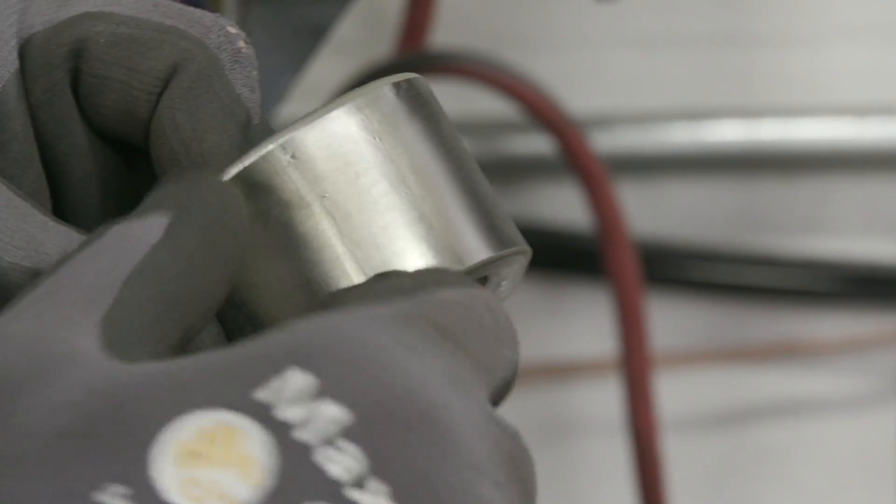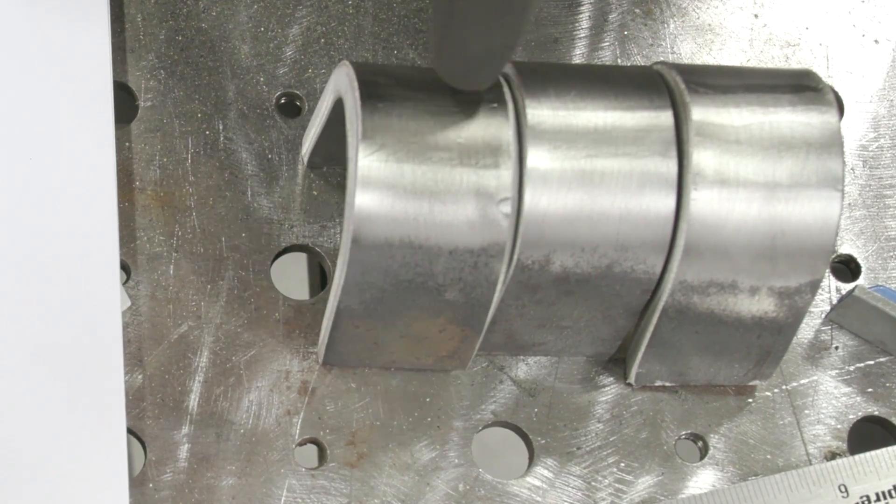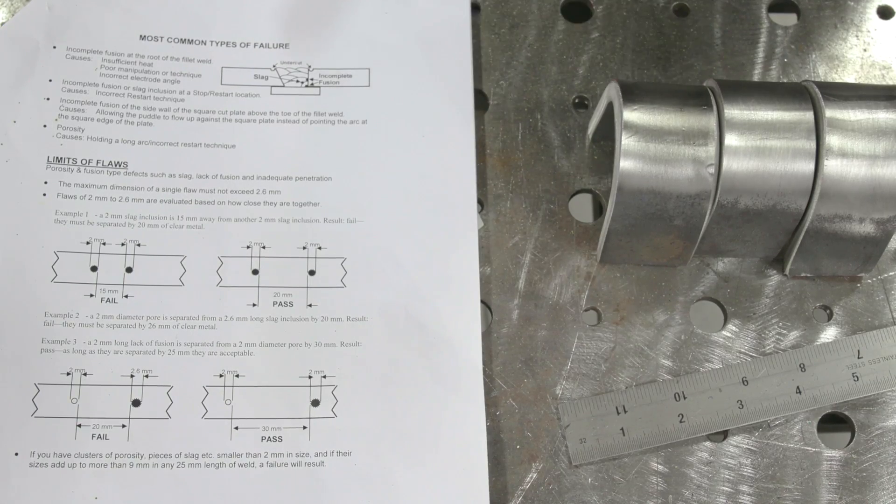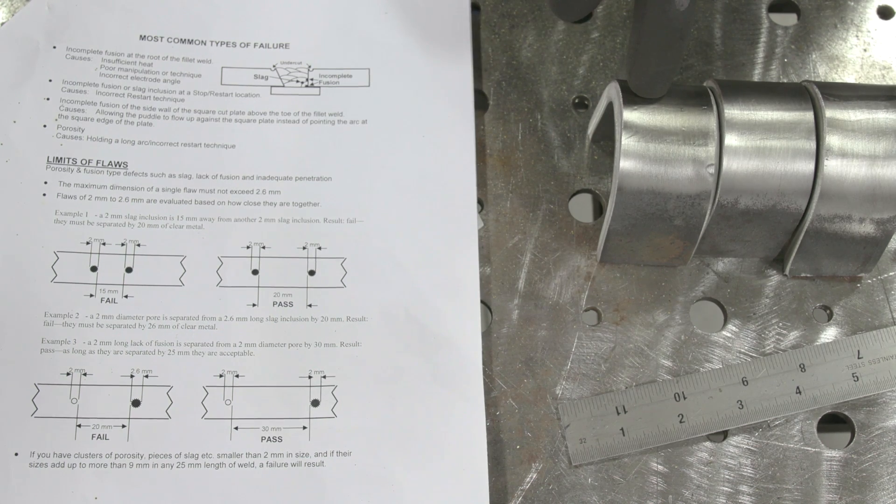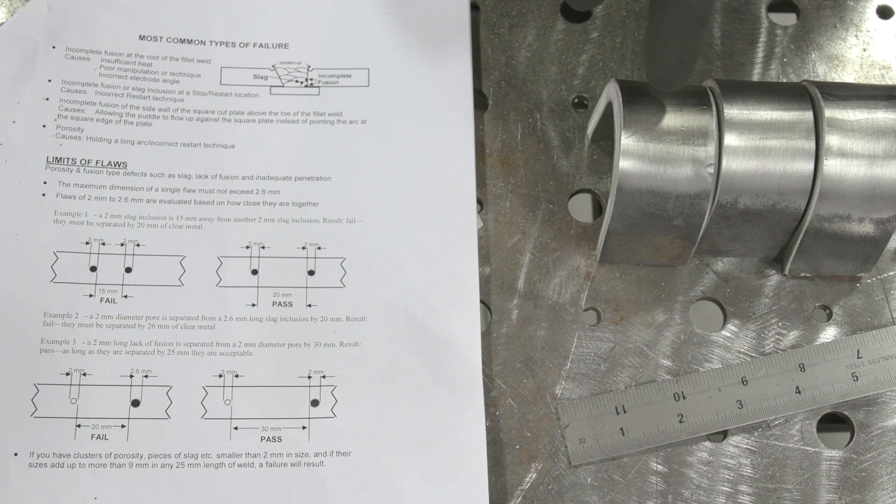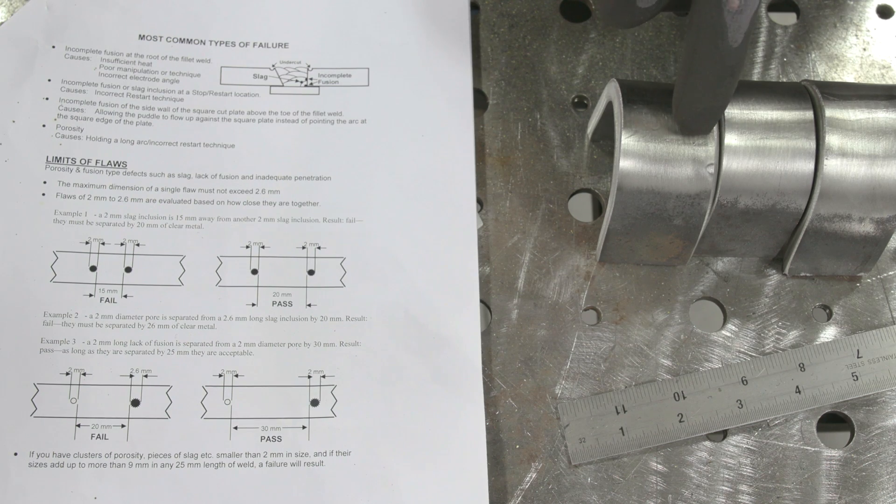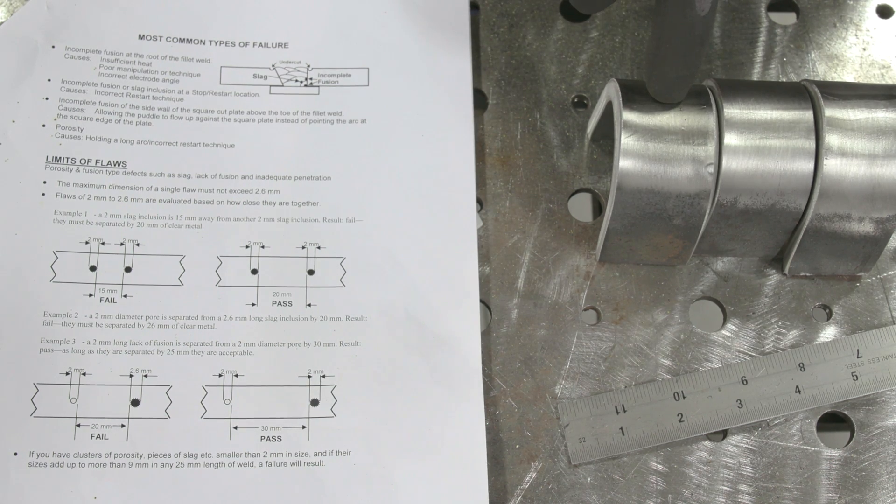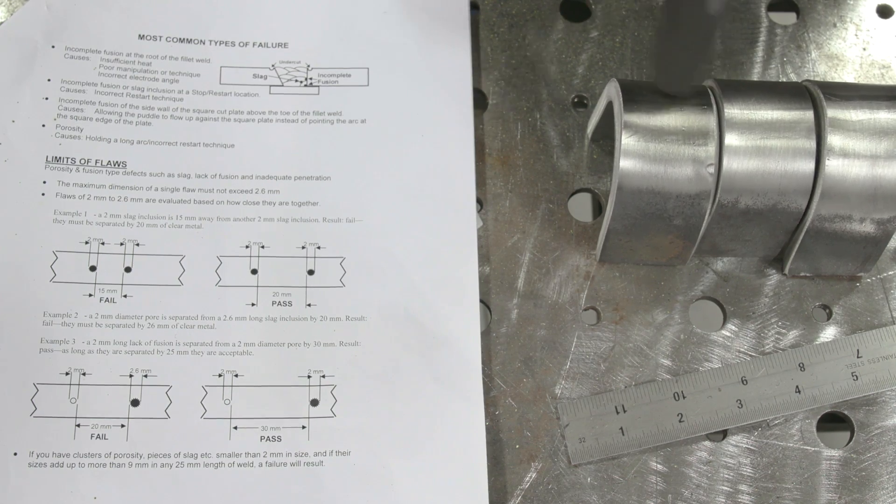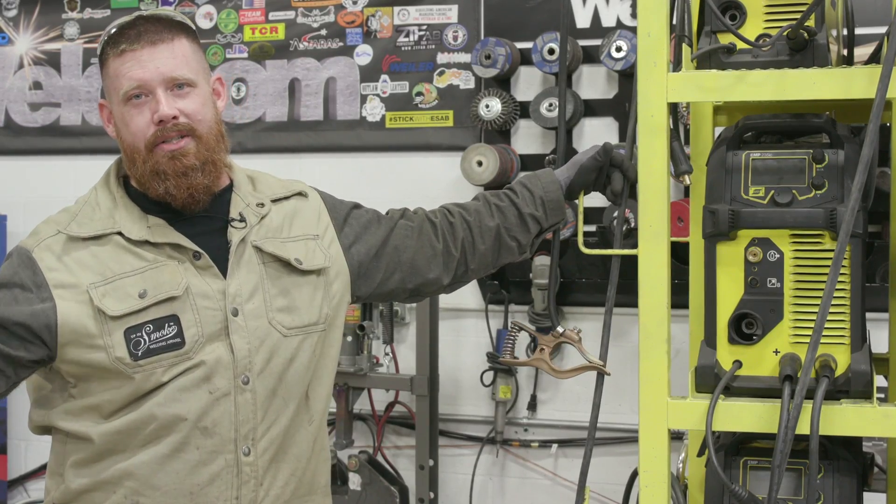Here's what I was wondering. I have three of those tiny little indications. Basically, it says if you have a cluster of porosity, piece of slag, etc., smaller than two millimeters in size, and if the size adds up to more than nine millimeters in any 25 millimeter length of weld, a failure will result. These are all less than two millimeters. Two millimeters, the standard equivalent is 1/16th of an inch, and these are all smaller than 1/16th of an inch, so I would say that would pass.